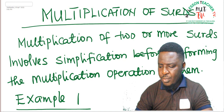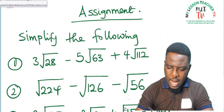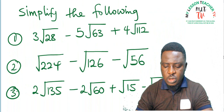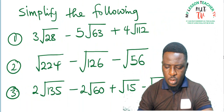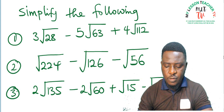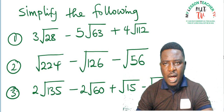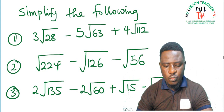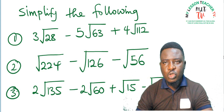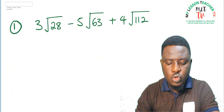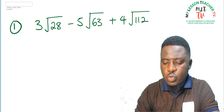I left the class with an assignment for you to do, where I said you should simplify the following: 3 root 28 minus 5 root 63 plus 4 root 112. You have to compare your answers with what I'm going to do now. I'm going to give you the solution to this and thereafter we move ahead to solving today's class. Question 1 says: 3 root 28 minus 5 root 63 plus 4 root 112.